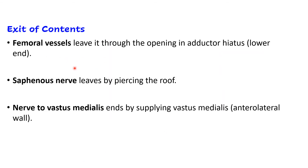Regarding the exit of contents: structures enter the adductor canal mainly through the apex of the femoral triangle. The femoral vessels leave through the adductor hiatus at the lower end and enter the popliteal fossa. The saphenous nerve leaves by piercing the roof and, being cutaneous, runs on the medial aspect of the knee joint and then on the medial aspect of the leg. The nerve to vastus medialis ends by supplying the vastus medialis muscle.